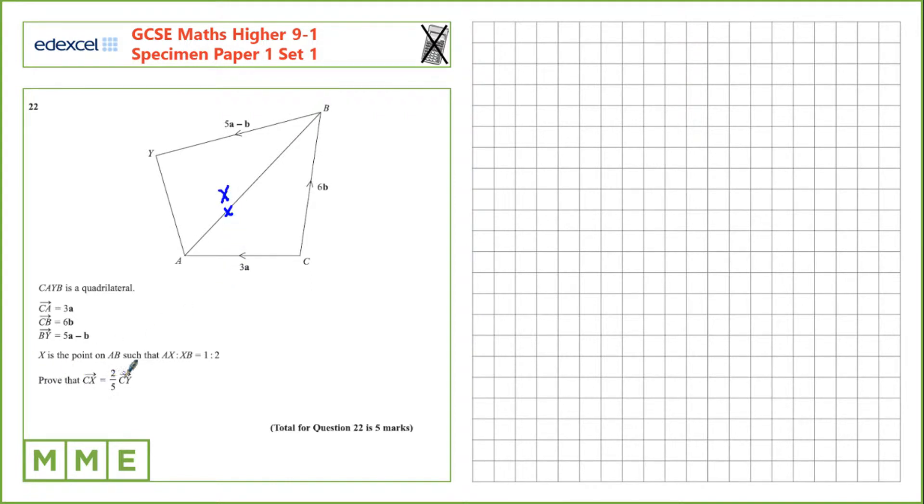Prove that CX equals two-fifths of CY. First, let's figure out AB and consequently AX. We can find CX later on.